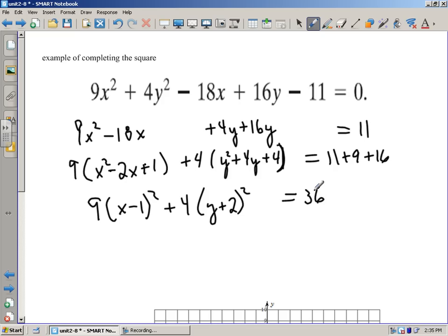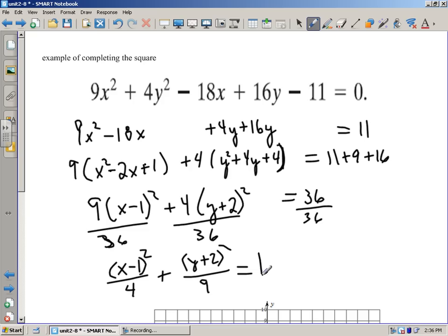And then what's next? Last step. So, this is supposed to equal 1, and I've got it equal to 36. So what I have to do is divide by 36. Divide this side by 36. Divide this by 36. Divide this by 36. And then simplify these fractions. 9 divided by 36 is 1 over 4. So that's going to give me (x minus 1) squared over 4 plus (y plus 2) squared over 9. And then that equals 1.